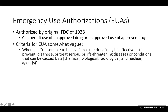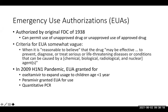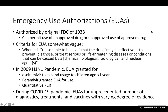The EUA criteria are quite vague — it's when it's reasonable to believe that the drug may be effective to prevent, diagnose, or treat serious or life-threatening disease caused by chemical, biologic, radiologic, or nuclear agents. Comparing our current pandemic to the H1N1 pandemic: there was an EUA for Tamiflu to treat infants and an IV medication called peramivir, plus PCR. In our current pandemic there have been numerous EUAs — some for diagnostics like PCR, treatments, and vaccines — with various levels of efficacy. Things like convalescent plasma or hydroxychloroquine didn't have a ton of evidence, while some have been approved based on data from Phase 3 studies.